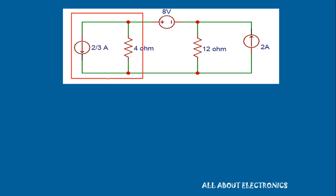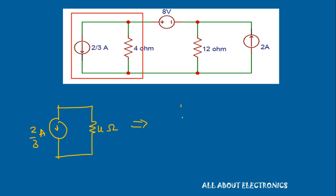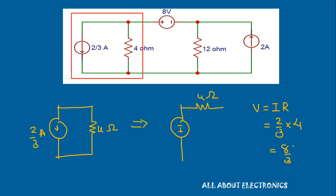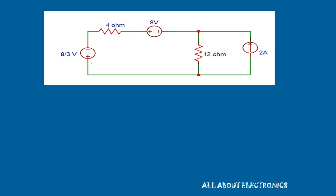Now we can transform this current source into a voltage source so that we have the transformed voltage source in series with the 8V source. We have a 2/3 A current source with a 4Ω resistor in parallel. The equivalent transformed source has a voltage source with a 4Ω resistor in series, where Vs = I·R = (2/3) × 4 = 8/3 V. We replace the 2/3 A current source with this 8/3 V voltage source.